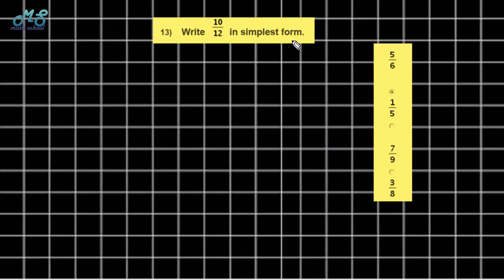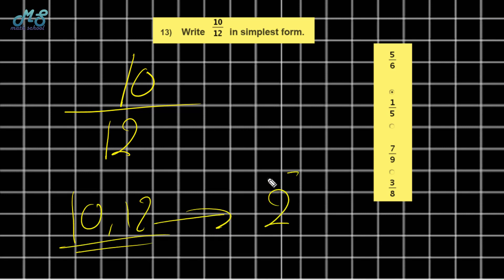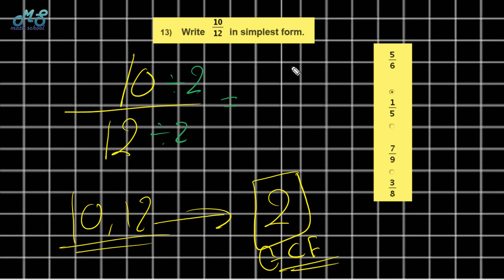Number 13: write 10 over 12 in simplest form. The GCF of 10 and 12 is 2. Divide both terms by 2: 10 divided by 2 equals 5, and 12 divided by 2 equals 6. The simplest form is 5 over 6 — the correct answer is the first one.